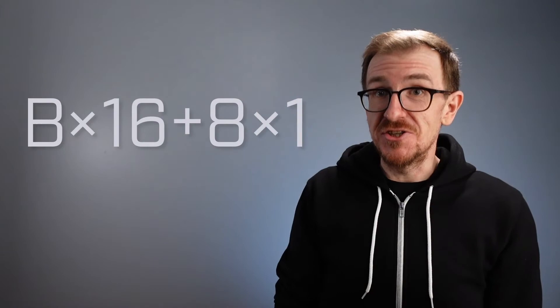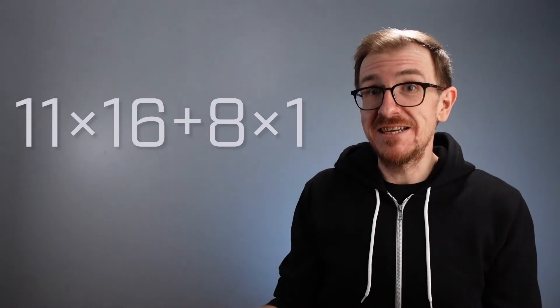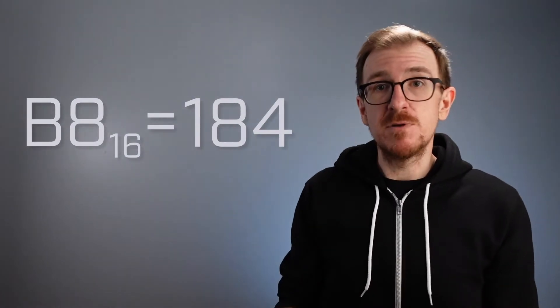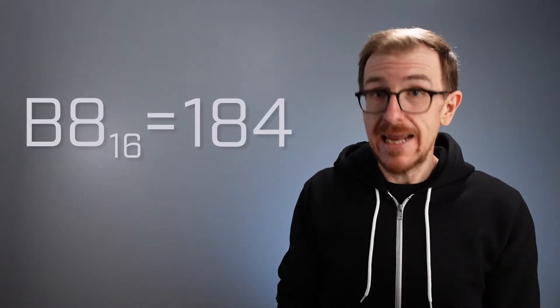Regardless, here's an example of a hexadecimal number. Let's convert this number to decimal using the same algorithm that we did for binary, except this time we'll use powers of 16 instead of powers of 2. To perform the conversion, we multiply each digit by its respective power of 16, and then add up the results. According to our algorithm, the hexadecimal number B8 is equivalent to the decimal number 184.